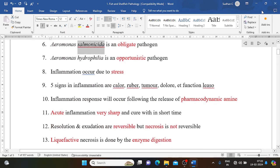Aeromonas salmonicida is an obligate pathogen. Aeromonas hydrophila is an opportunistic pathogen. Inflammation occurred due to stress. Five signs in inflammation are calor, rubor, tumor, dolor, and functio laesa. Inflammation response will occur following the release of pharmacodynamic amine. Acute inflammation very sharp and cure within short time.